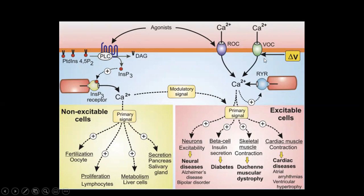And here the third one, which is in the excitable cells, is the voltage-operated calcium entry, where due to the depolarization of the membrane, the channel opens and the calcium enters. And then this can activate the ryanodine receptor also in the ER, and then there will be an influx of the calcium in the cytoplasm.